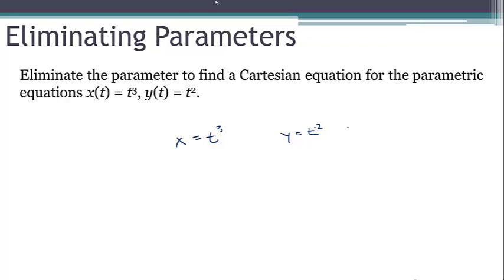So first, I'm going to take the x equation and solve it for t by taking the cube root of both sides. Now I can substitute this into the expression in the y equation to get my final result. This is the cube root of x squared.